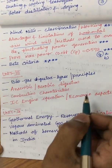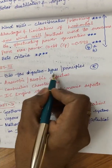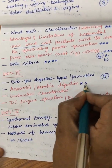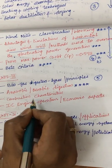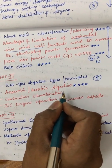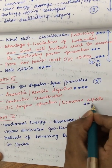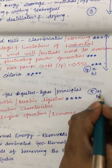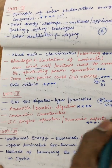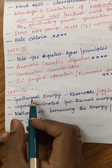Unit 3 is very short — I am expecting only one question from it. It covers biogas types, digesters, and the principles of biogas. A very important gunshot question is the differences between anaerobic and aerobic digestion and their advantages. Combustion characteristics, IC engine operation, and economic aspects may also appear as the B part in a 5A/5B split or 8/7 mark combination.